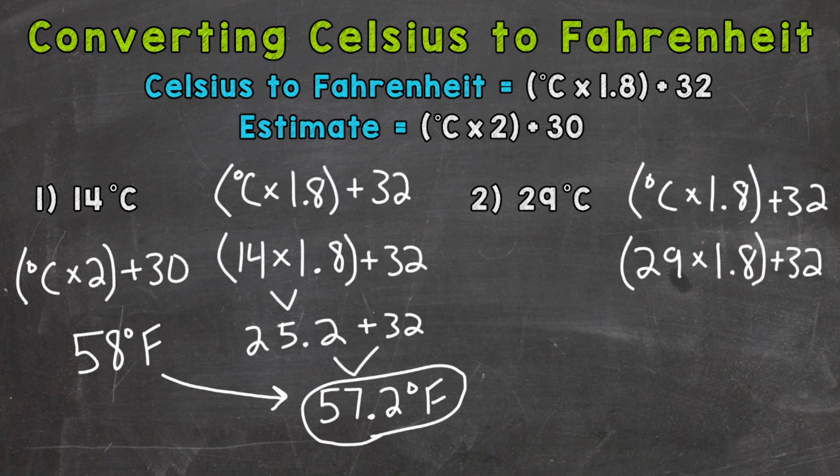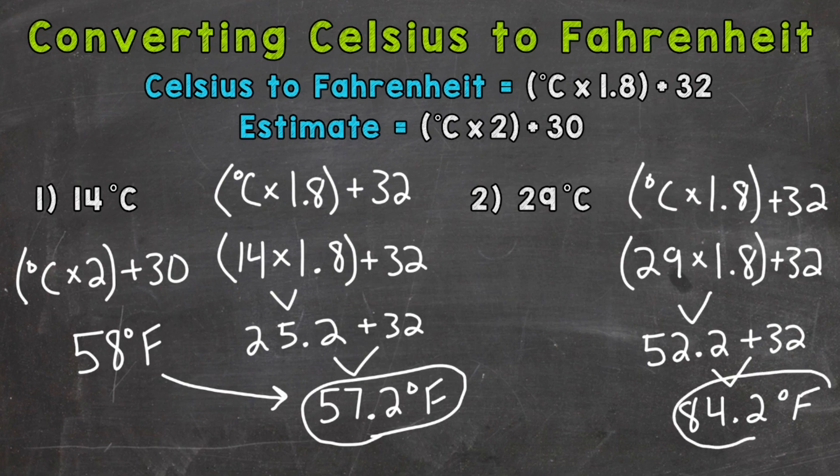So 29 times 1.8 is going to give us an answer of 52.2 plus 32. And our conversion is going to be 84.2 degrees Fahrenheit. So 29 degrees Celsius equals 84.2 degrees Fahrenheit.